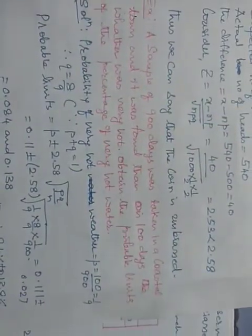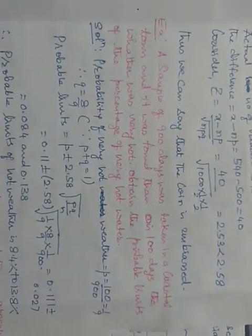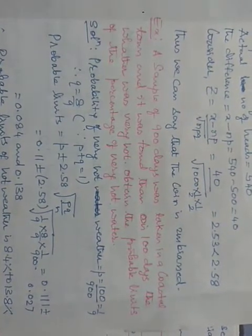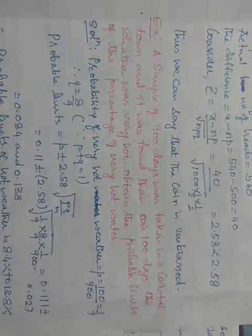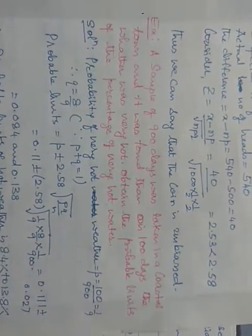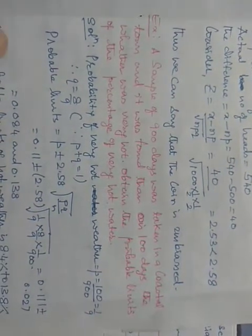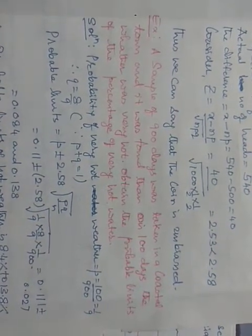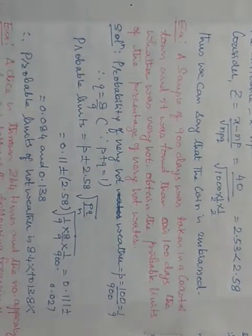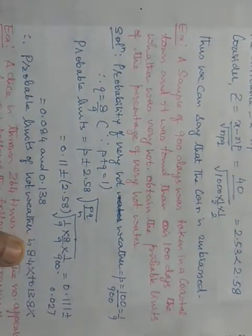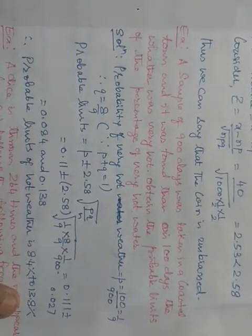The second example: A sample of 900 days was taken in a coastal town and it was found that on 100 days the weather was very hot. Obtain the probable limits of the percentage of very hot weather. The formula is already shown here. Just substitute the respective values from the given data and the value will be 0.084 and 0.138. That is, the probable limits of hot weather in terms of percentage is 8.4 percent and 13.8 percent.